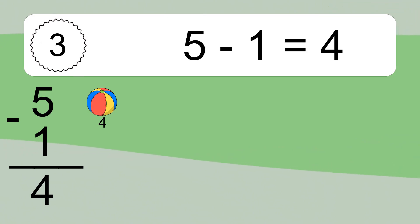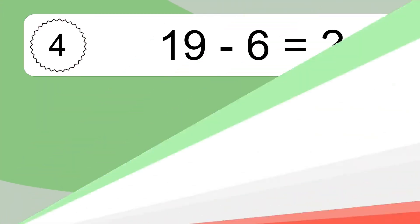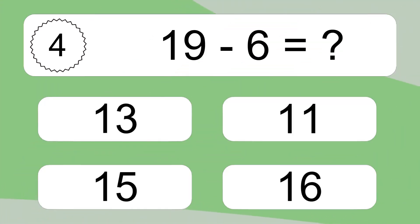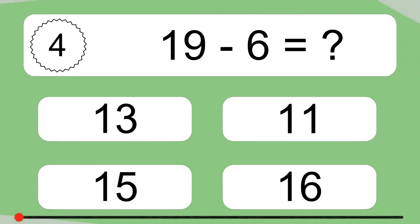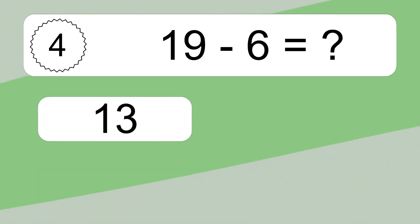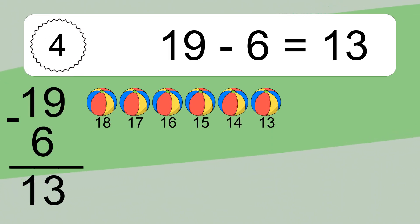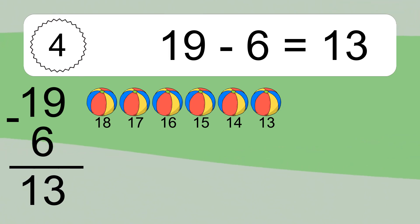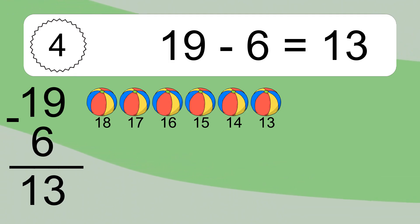19 minus 6 equals what? 19 minus 6 equals 13. Let's count it: 18, 17, 16, 15, 14, 13.